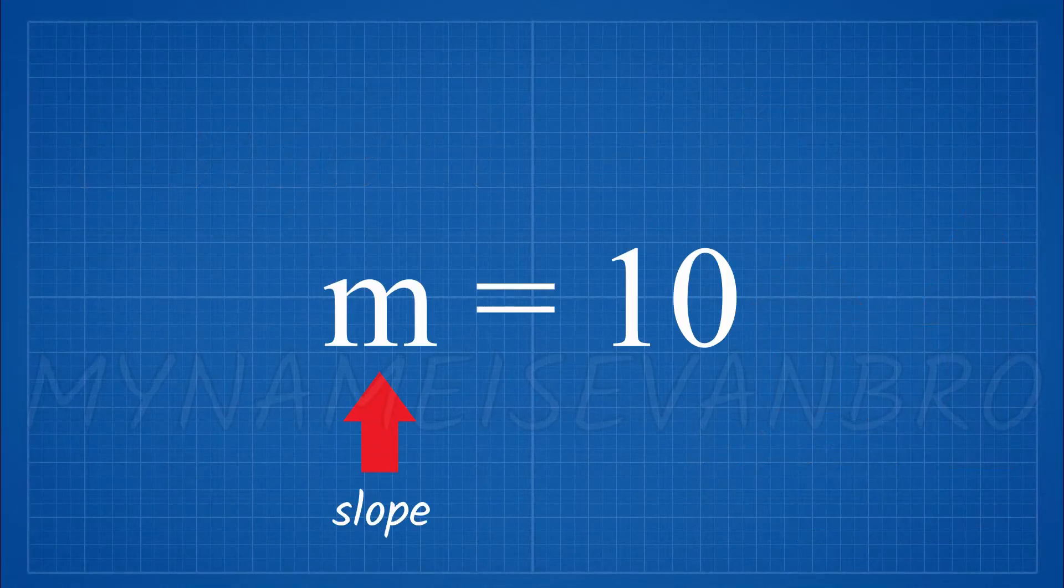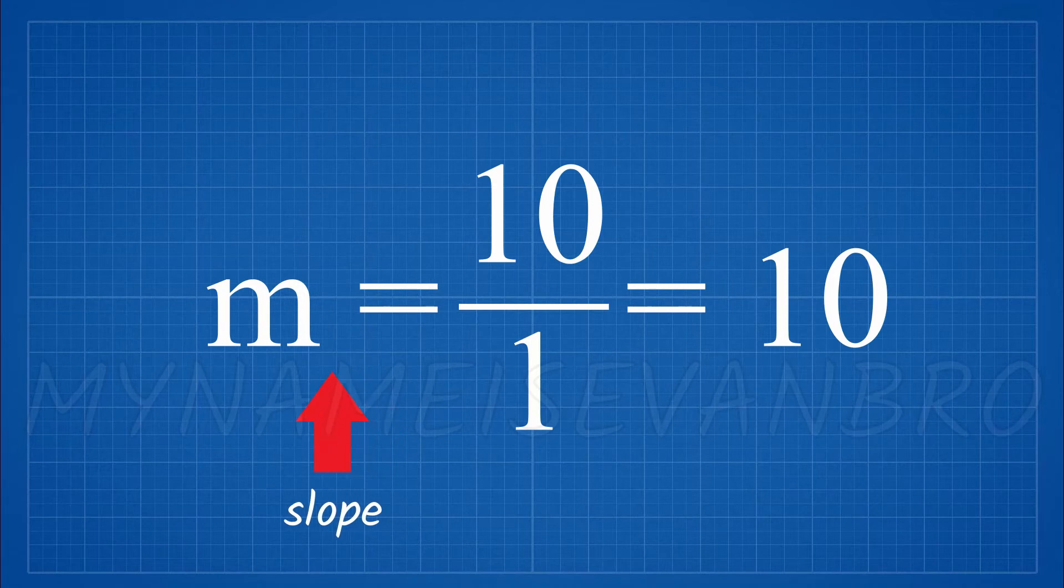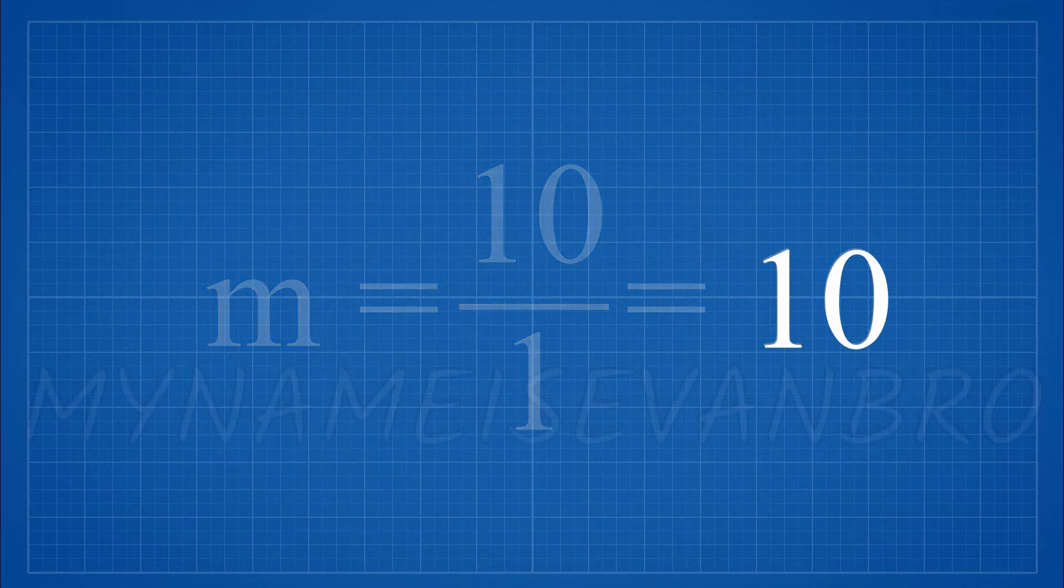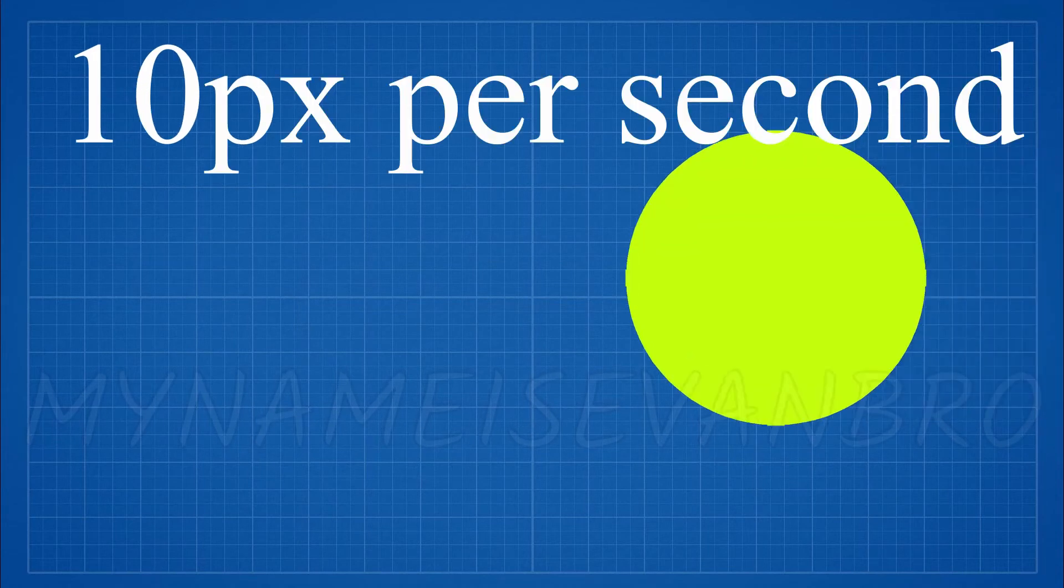This slope value can only be used for one of the axes. This is because a slope is a fraction. If the product is 10, that means the slope is equal to 10 over 1. This is a problem though because the value 10 is large; some colonies would be moving at 10 pixels per second.